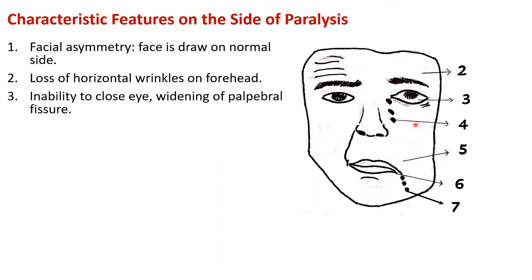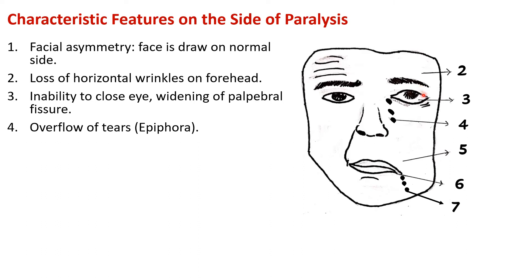Third is inability to close the eye. The palpebral fissure — the space between the upper and lower eyelids — will be widened because the eye cannot be closed on the paralyzed side. Next is overflow of tears, known as epiphora. Lacrimal fluid normally moves from the lateral to the medial side of the conjunctival sac and drains into the nasolacrimal duct when you blink. When control of the blinking muscles is lost, tears overflow — this is epiphora.